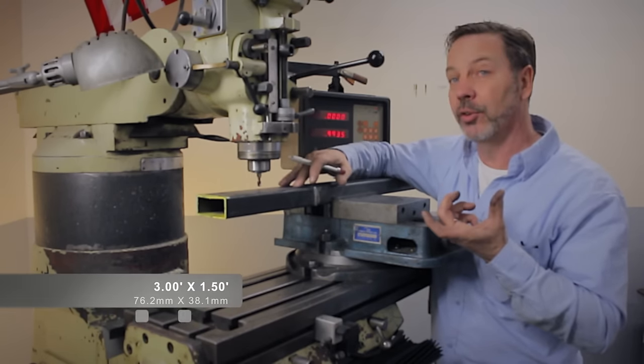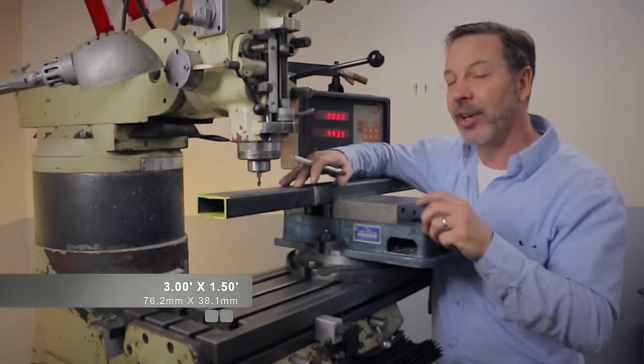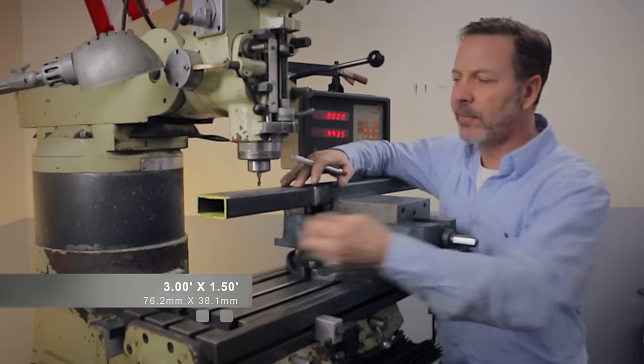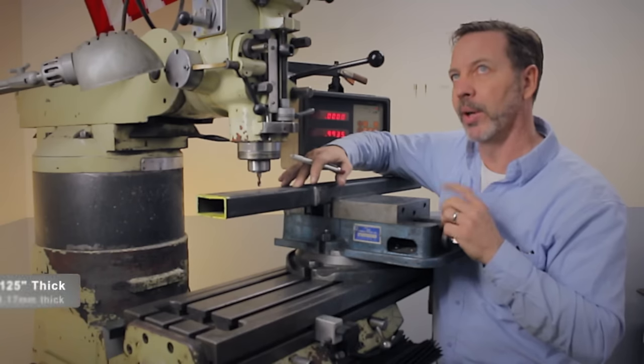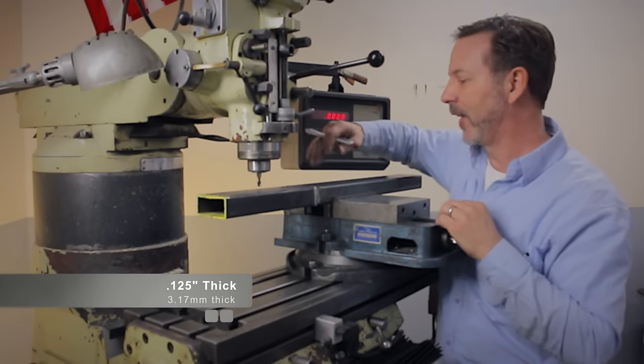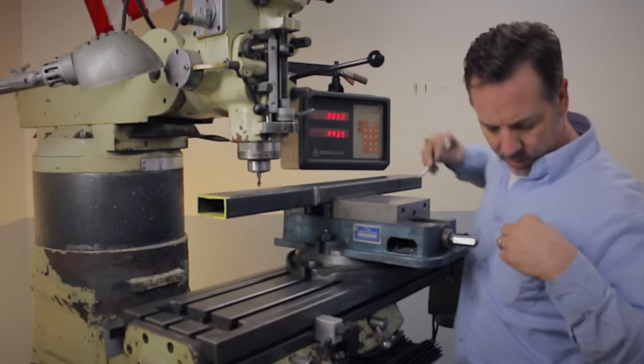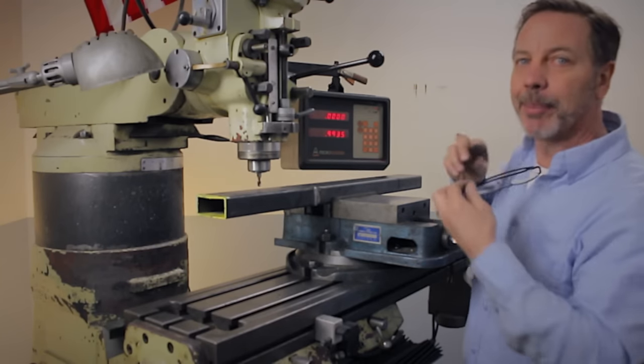This steel here is three inches wide and inch and a half thick and I think it's one-eighth inch thick wall or 1.125 thickness. So let's get cutting and see what happens.